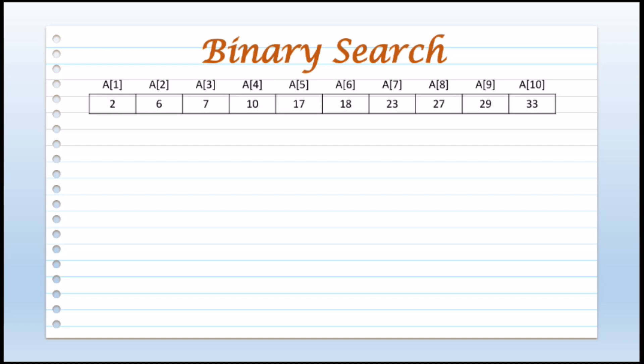Suppose these are the given numbers which are in increasing order. There are 10 elements: 2, 6, 7, 10, 17, 18, 23, 27, 29, and 33. All these numbers are in increasing order. Suppose we have to find whether the value 6 is present or not in the list. To apply divide and conquer strategy, we can divide the problem into smaller parts. First we will divide the list into 2 parts. For that, we have to first find out the middle value and then compare it with the searching value.